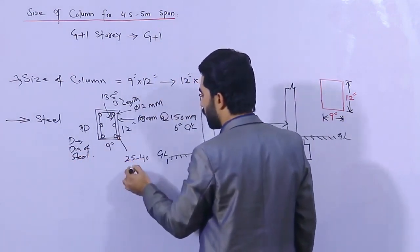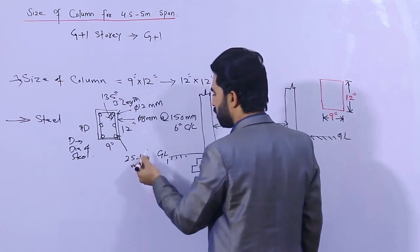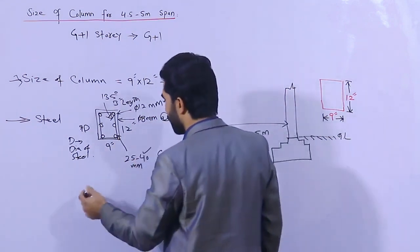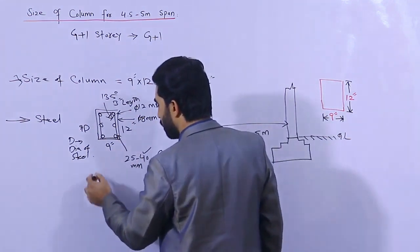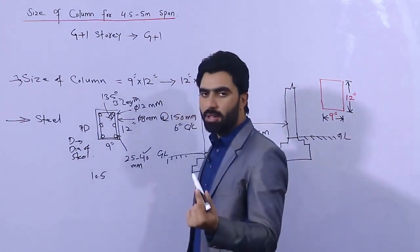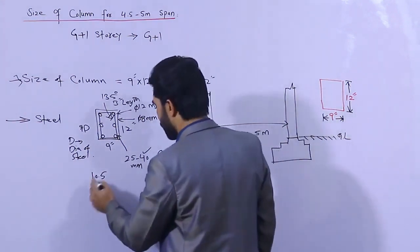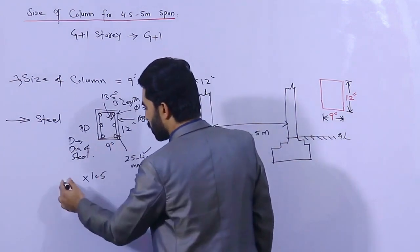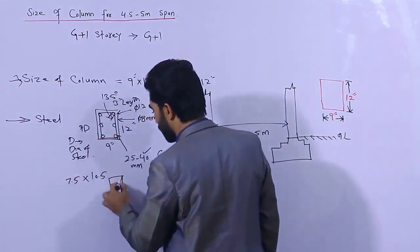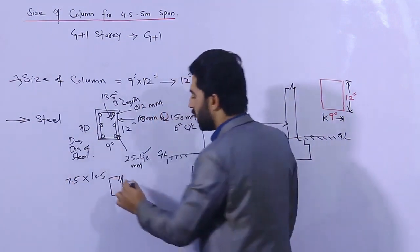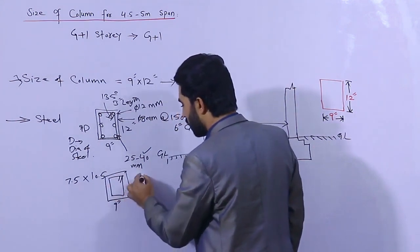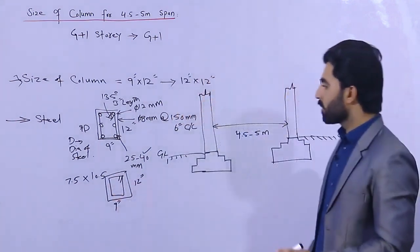The concrete cover should be 25 to 40 mm — 40 mm is best. So here the ring size — since the column is 12 inches wide, the ring size should be minimum 10.5 inches, because 1.5 inches is concrete cover on each side. For the 9-inch side, it should be 7.5 inches. So the ring size is 10.5 by 7.5 inches for a 9 by 12 inch column.